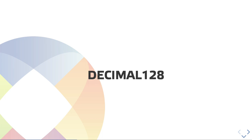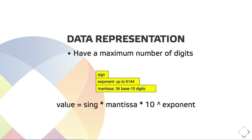Let's talk about one of the solutions we might have: a new primitive type called Decimal128. This is a representation of a value that has a maximum number of digits it can represent, stored in 128 bits. In those bits we have the sign — one bit — an exponent that goes up to 6144 and can be negative, and also a mantissa that is 34 base-10 digits. So we can have 34 digits in the mantissa, and that is the precision we would get. The value is represented as sign × mantissa × 10^exponent.